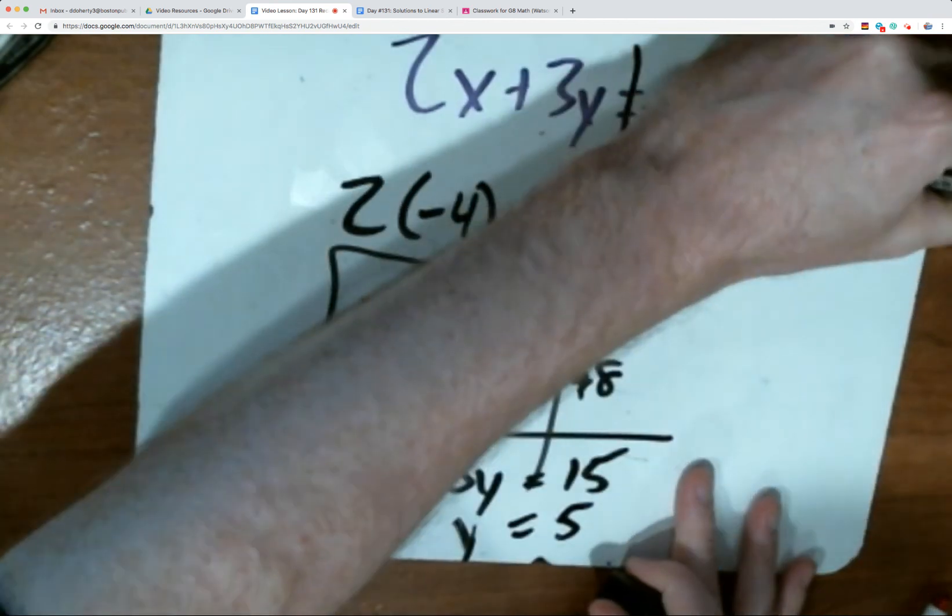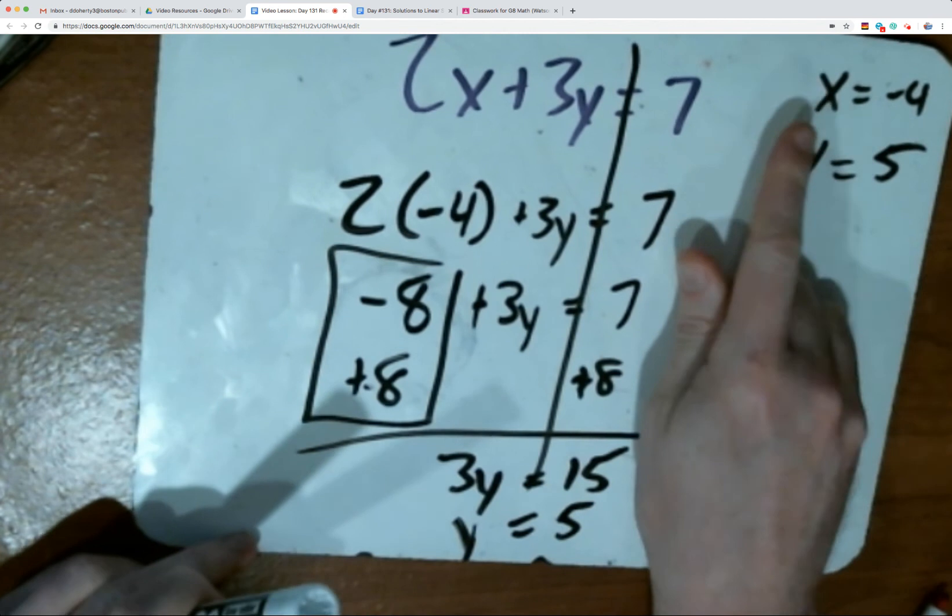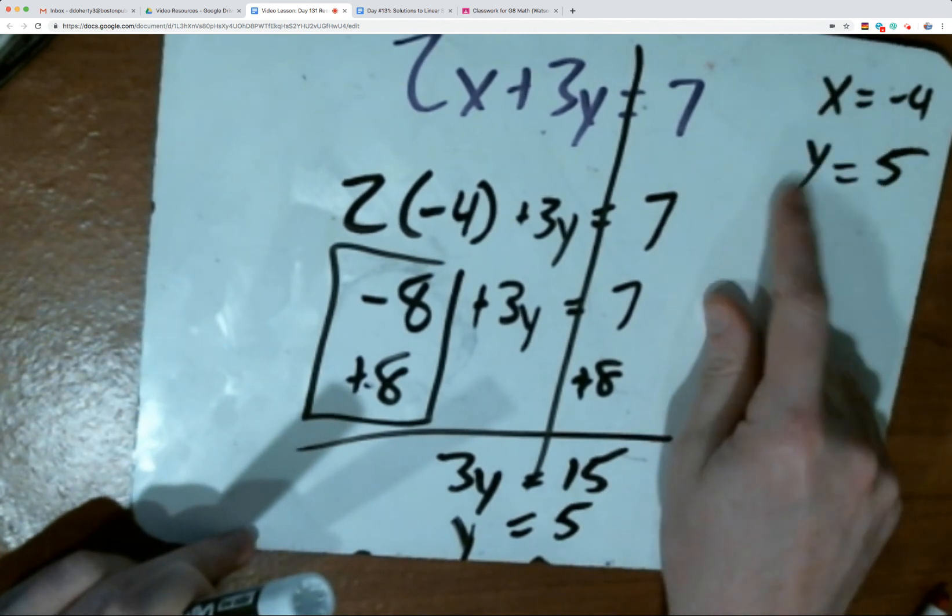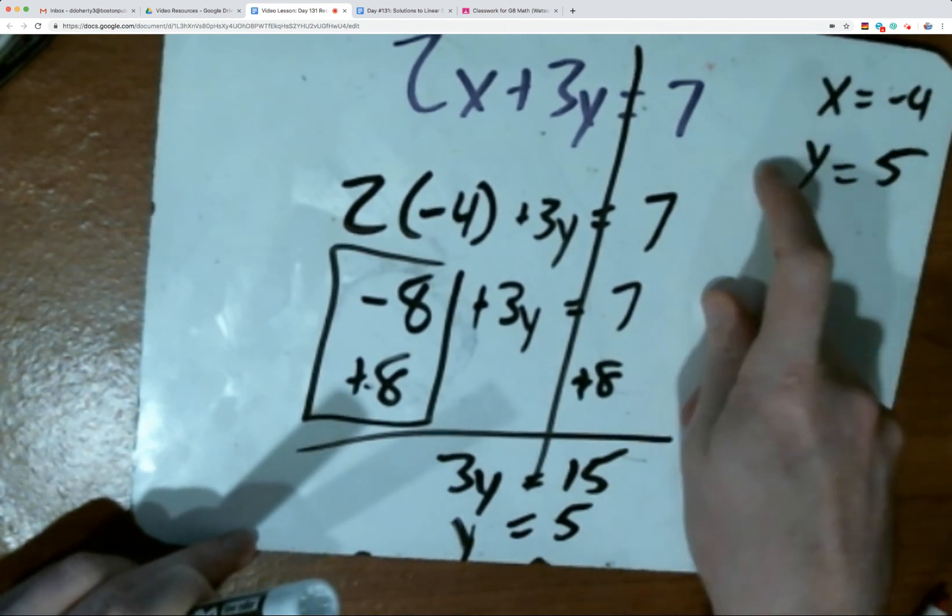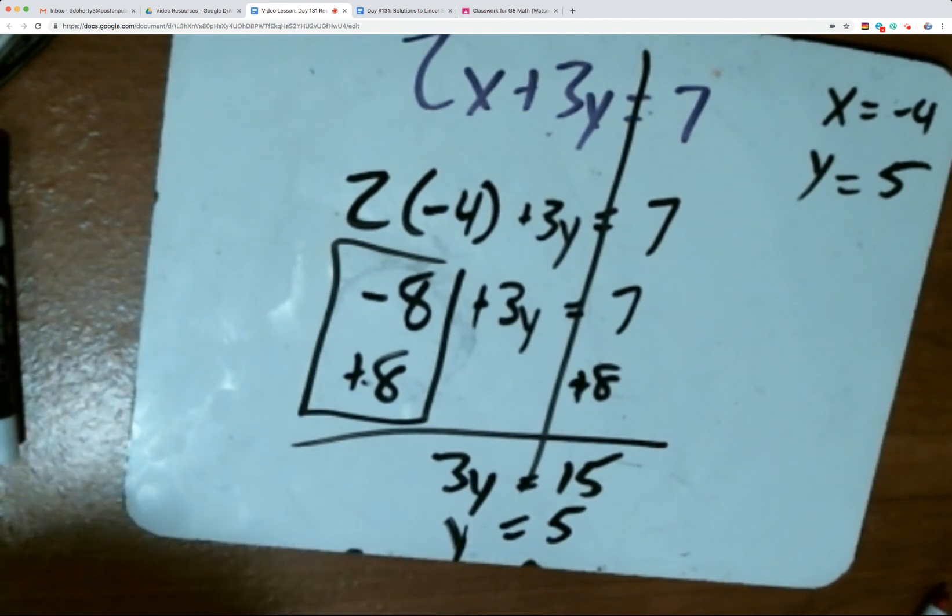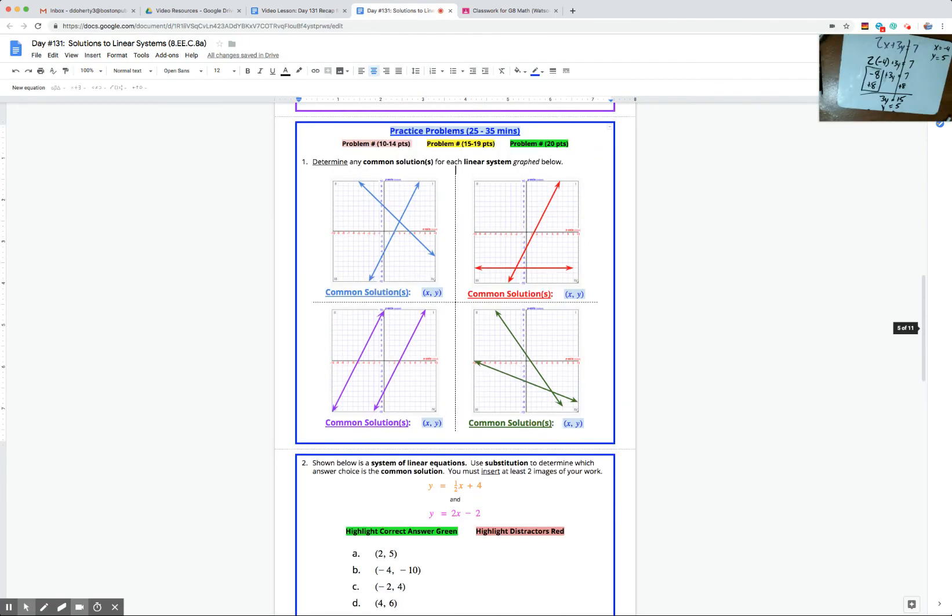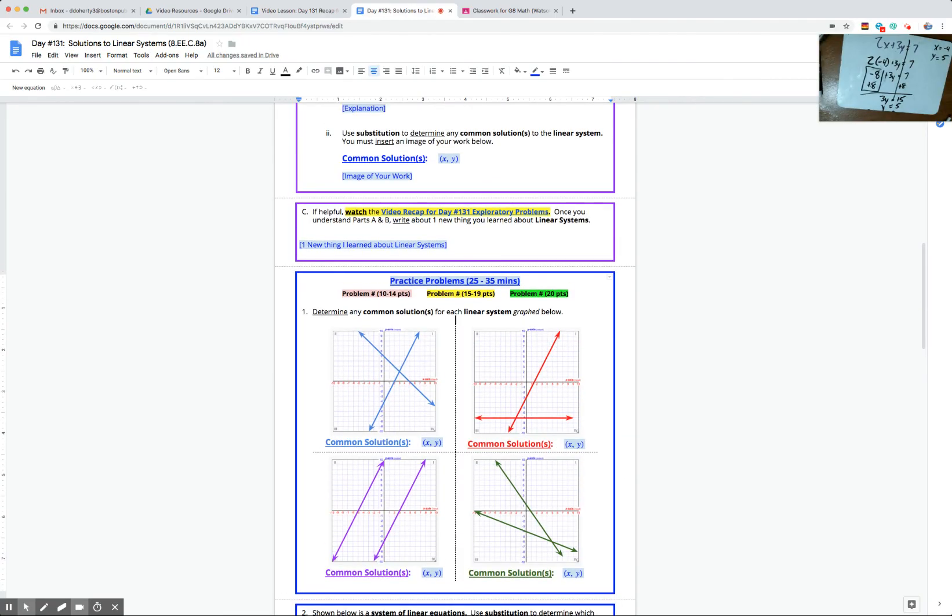So at this point now, we know the common solution, the solution for x and y that works in both of these equations. x has to be negative 4. y will have to be 5. That solution works for both equations. Thanks for watching the end of the video. Thank you for continuing the good work as you work through the practice problems. The last thing I'm going to note, make sure that all of you should be filling out something for part C right now. One new thing you've learned about linear systems today before you're spending 25 or 35 minutes working through practice problems and practicing these skills.